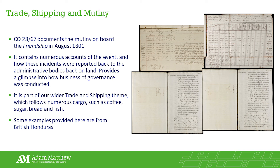It's also worth noting how black crew members were referred to by their race, while white crew members were referred to by their position on board. This is part of our wider trade and shipping theme, which follows numerous cargoes such as coffee, sugar, bread, and fish — with examples from British Honduras. Trade and shipping is a particularly important theme because many of the other themes are connected through shipping, due to the financial benefits Britain gained from its Caribbean exports and the slave trade. The resource provides statistics and data from the period relating to financial information which students can use to study in more depth.